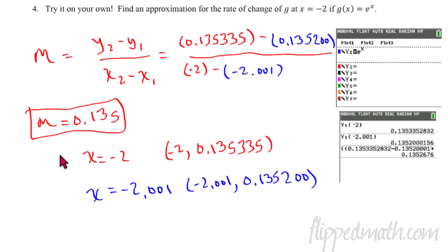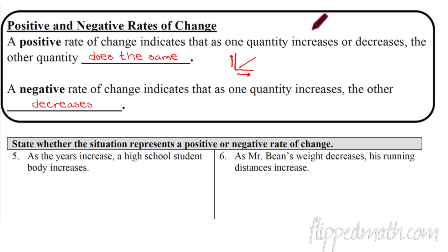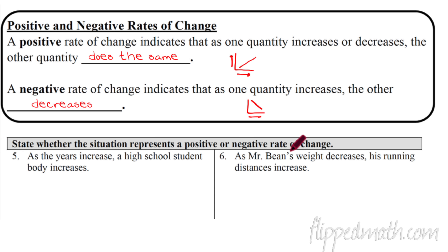One last part: positive and negative rates of change. A positive rate of change means that as one quantity increases, the other also increases — as x increases, y increases too. Think of a graph going uphill from left to right, like Mario running uphill. A negative rate of change means as x increases, y decreases — going downhill from left to right. Pause the video and try to figure out whether problems five and six are positive or negative.